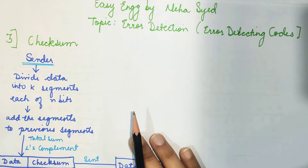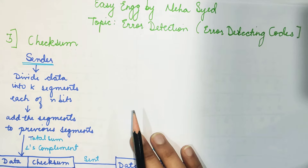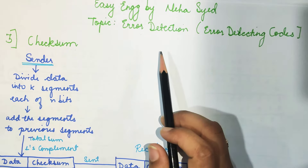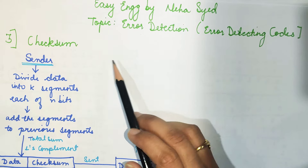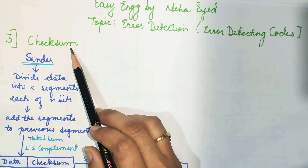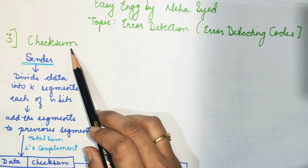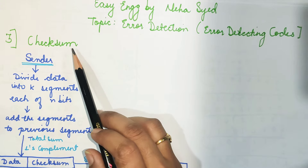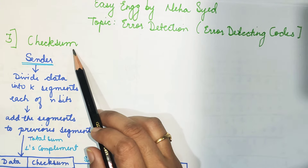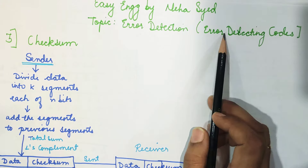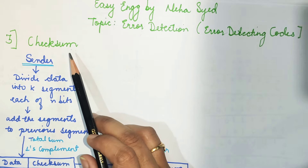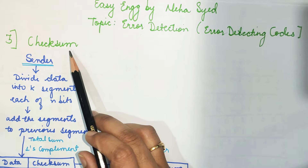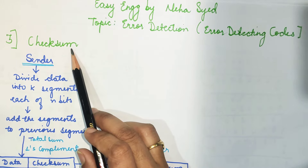Hello friends, welcome back to Easy Engineering by Neha Sayad. In this video we are going to see another technique of error detection, that is checksum. In the previous video we have seen two-dimensional parity check. Now we are going to see the next technique of error detecting code — detecting an error using checksum.